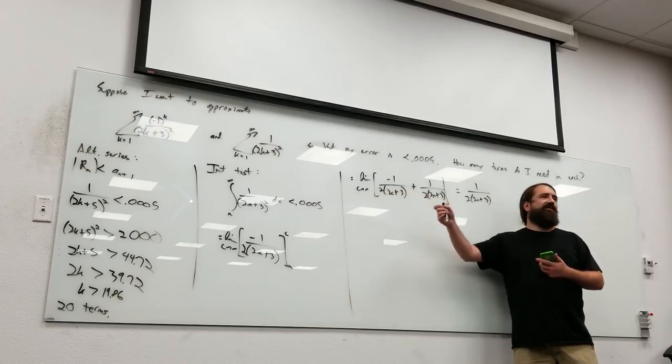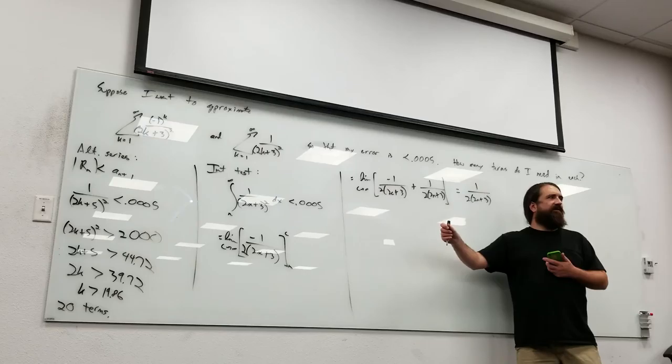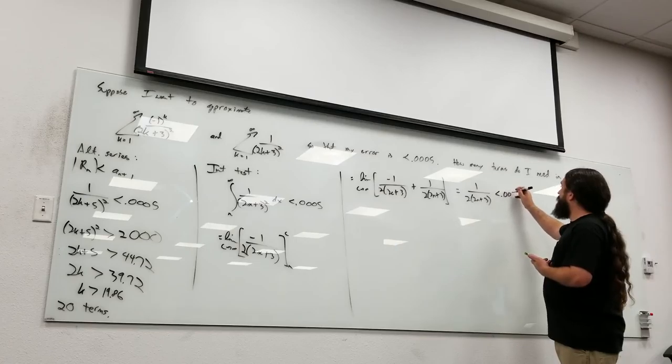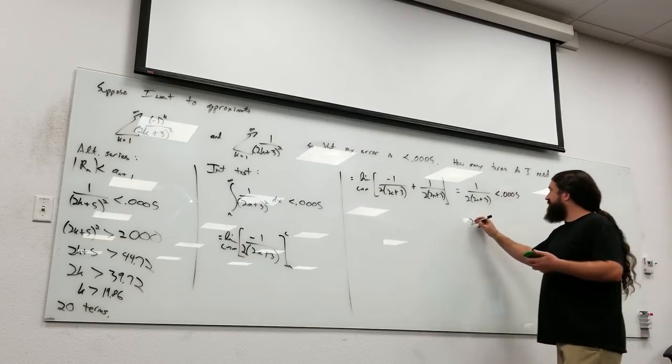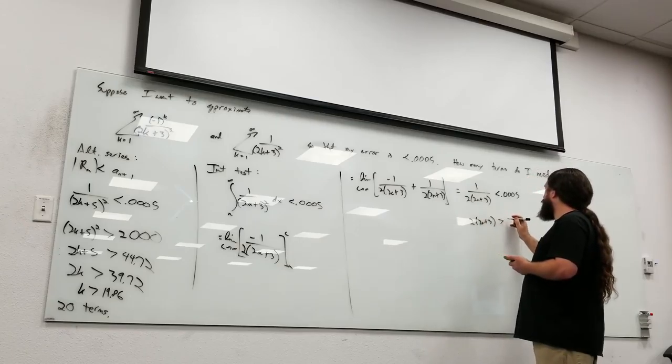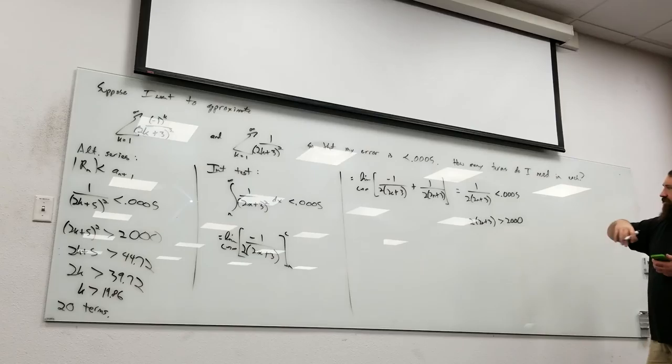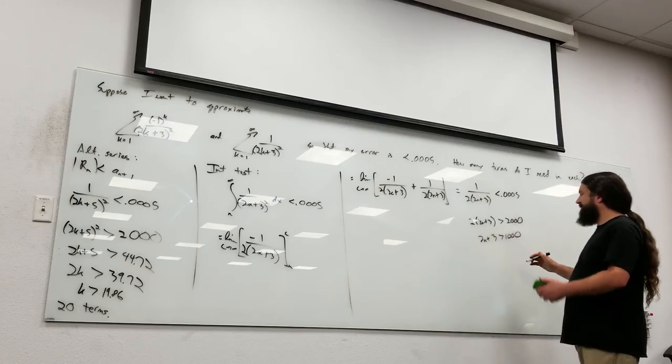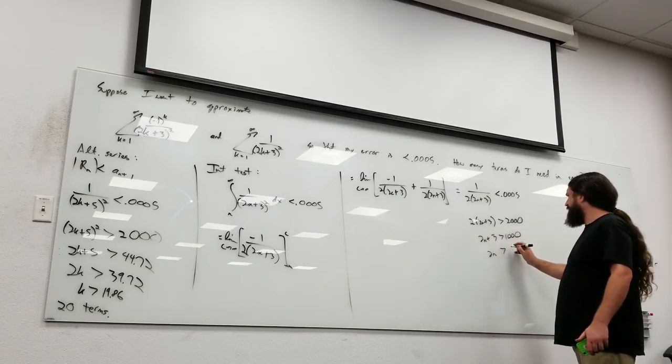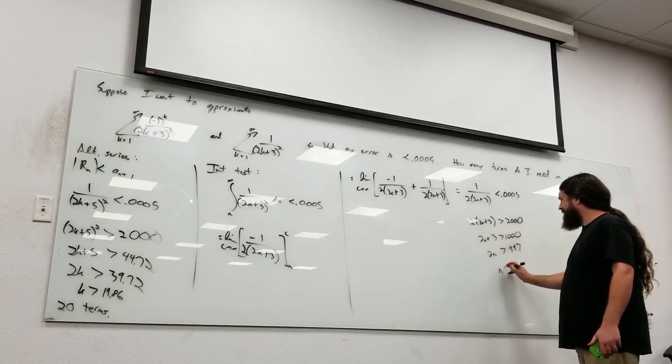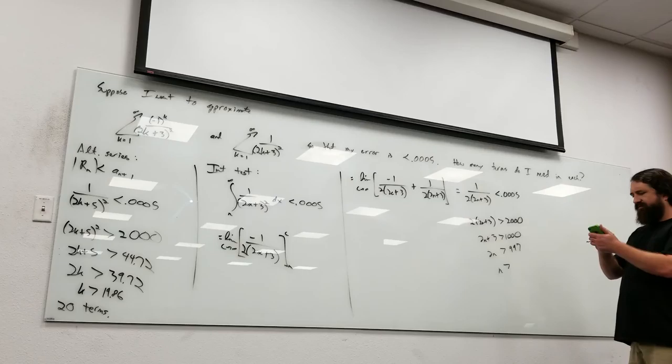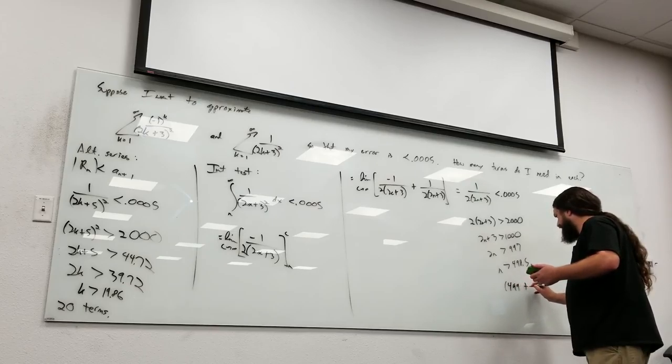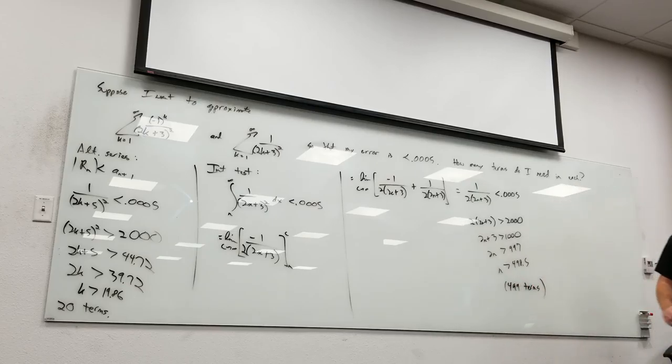If you get to this stage and you have a negative number, what probably happened was you didn't take an integral from n to infinity. So if this is less than 0.0005, this means 2 times 2n plus 3 is bigger than 2,000. This tells me that 2n plus 3 is bigger than 1,000, so 2n is bigger than 997. So 997 divided by 2, n is bigger than 498.5, so it means I need 499 terms.